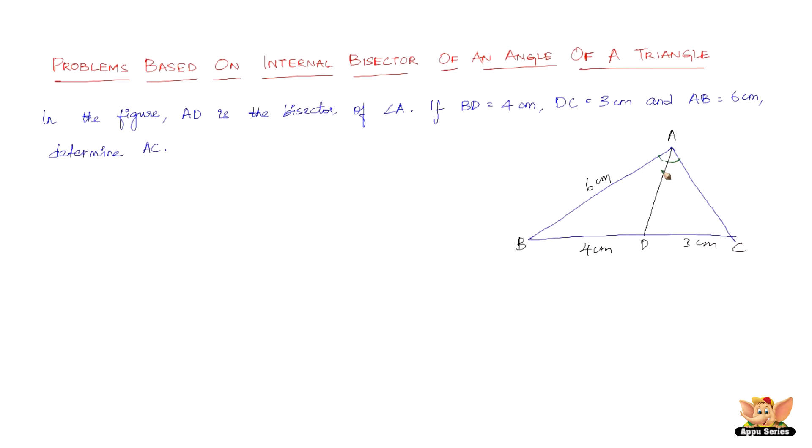So angle A is bisected by the line AD and if BD equals 4 centimeters and DC equals 3 centimeters and AB equals 6 centimeters, determine AC or find AC.